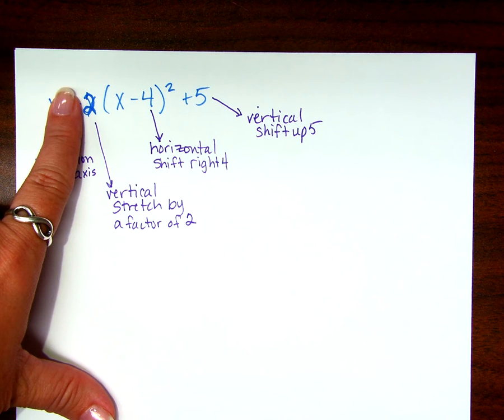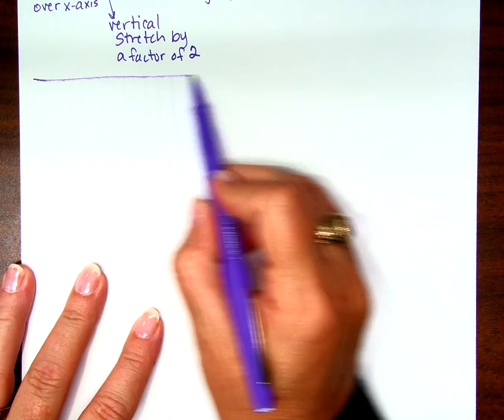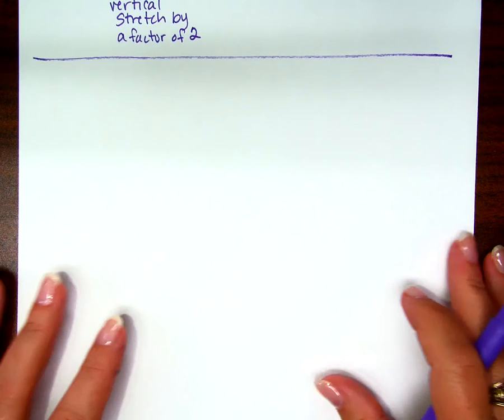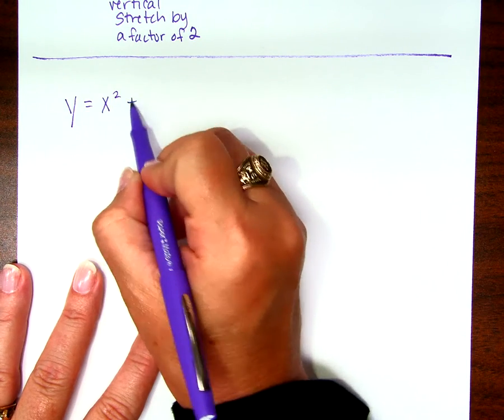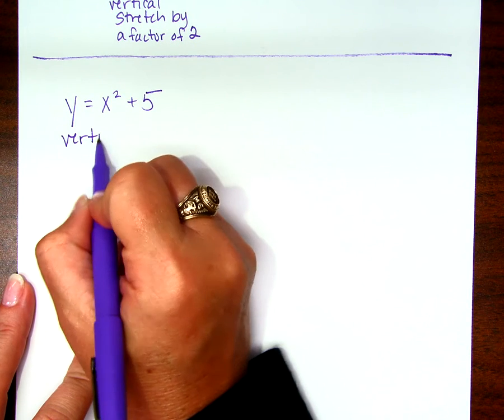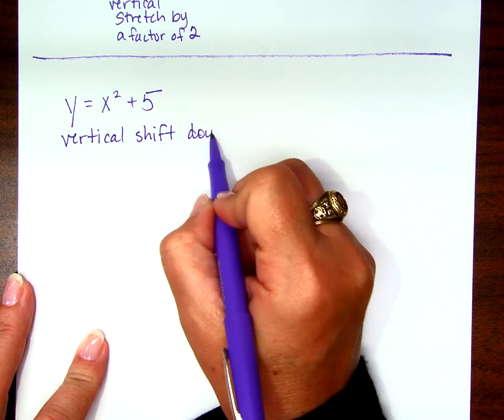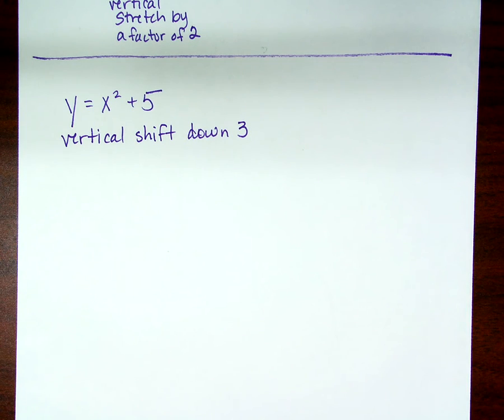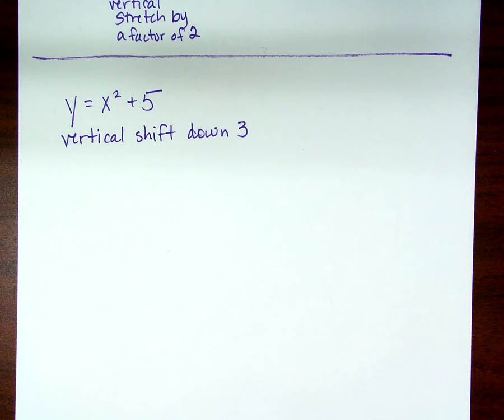So we don't even pay attention to it anymore once we know it's a reflection. It's just a stretch by a factor of two. You okay with that? How do you feel about this? Alright then let's go a step further. Let's not start at the parent function today. Let's start somewhere else. What if we started right here? Y equals x squared plus five. That's where I'm starting. And I want to make a vertical shift down three from this function. What is my new equation?